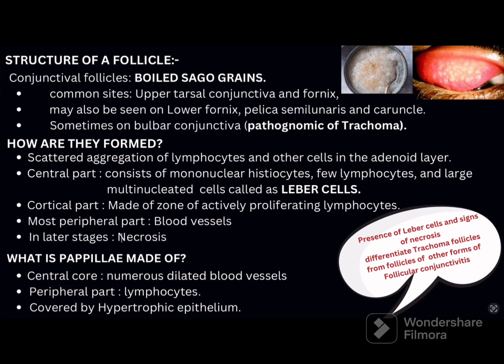Comparing follicle and papilla: in a papilla, the central core has a dilated vessel and the peripheral part has lymphocytes. In a follicle, the peripheral part has blood vessels, the central part has histiocytes, lymphocytes, and Leber cells, and the cortical part has lymphocytes. That is the key difference between a follicle and a papilla.